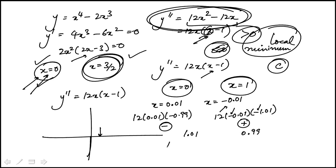At 1.01, this would be positive. And 0.99, this would be minus 0.01, this piece here.